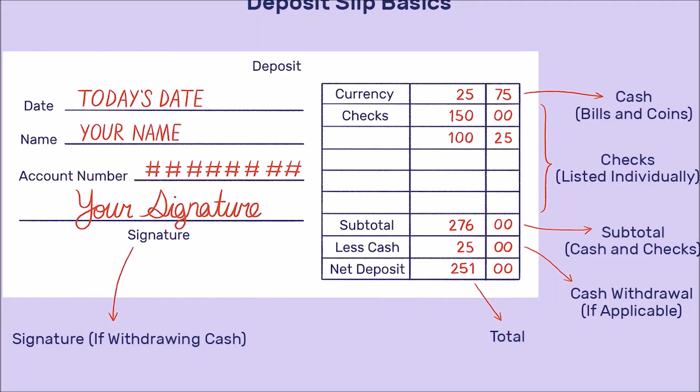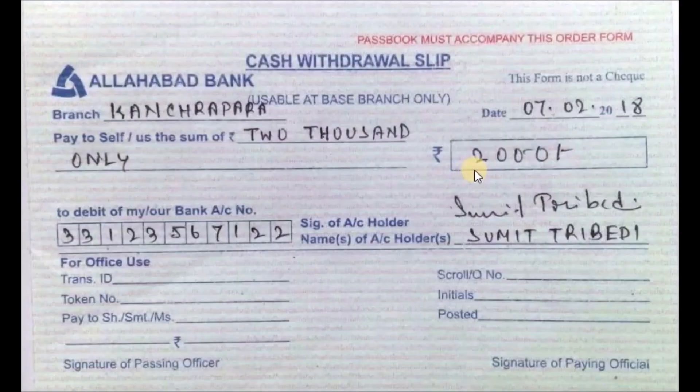In other words, these documents contain original information about the transactions to be recorded in the books of accounts. They act as documentary evidence to support all entries in the books of accounts. Some of these accounting entries may refer to things like buying and selling of goods, return of goods in trade, payment, or receiving of cash, and so on.